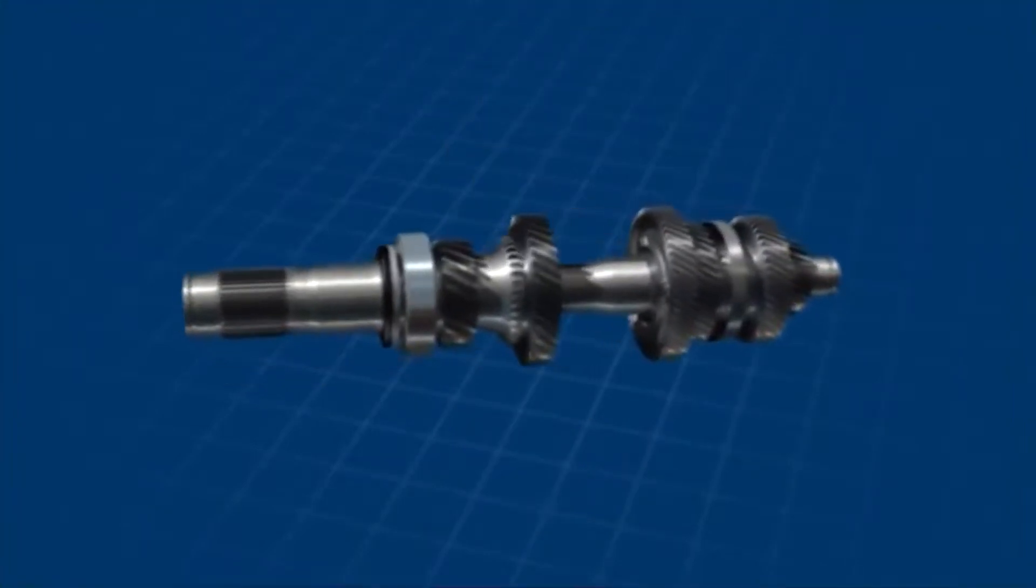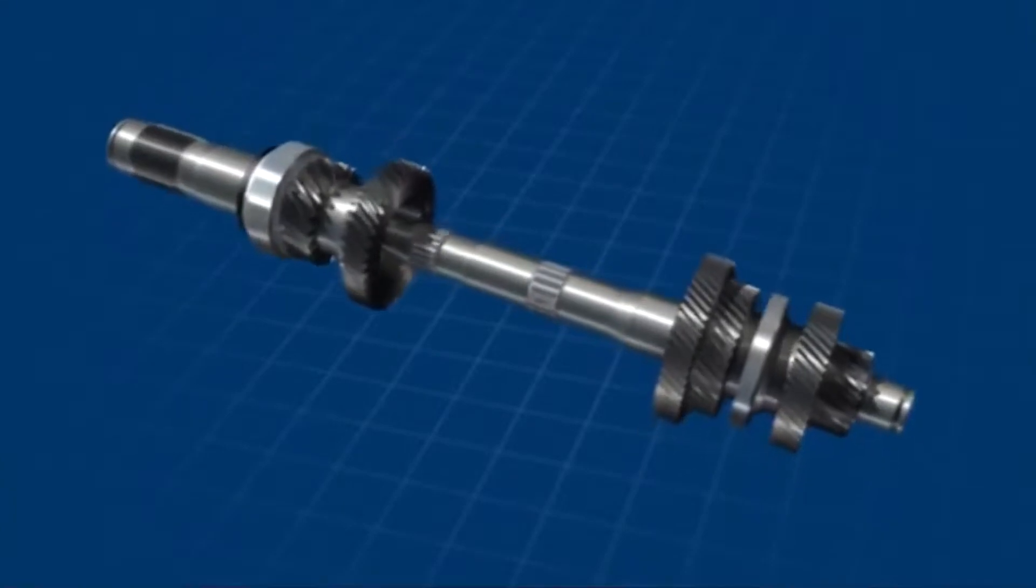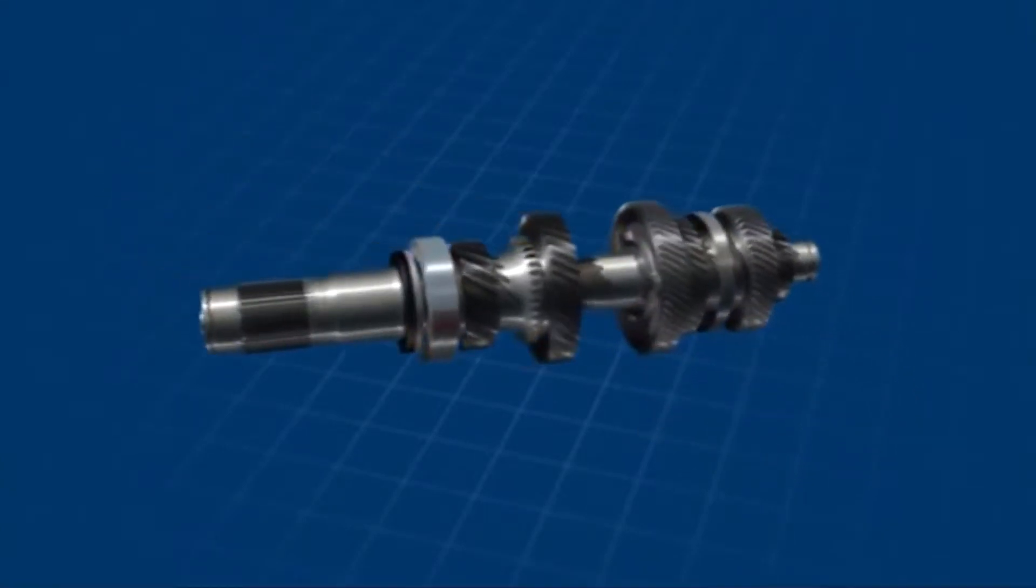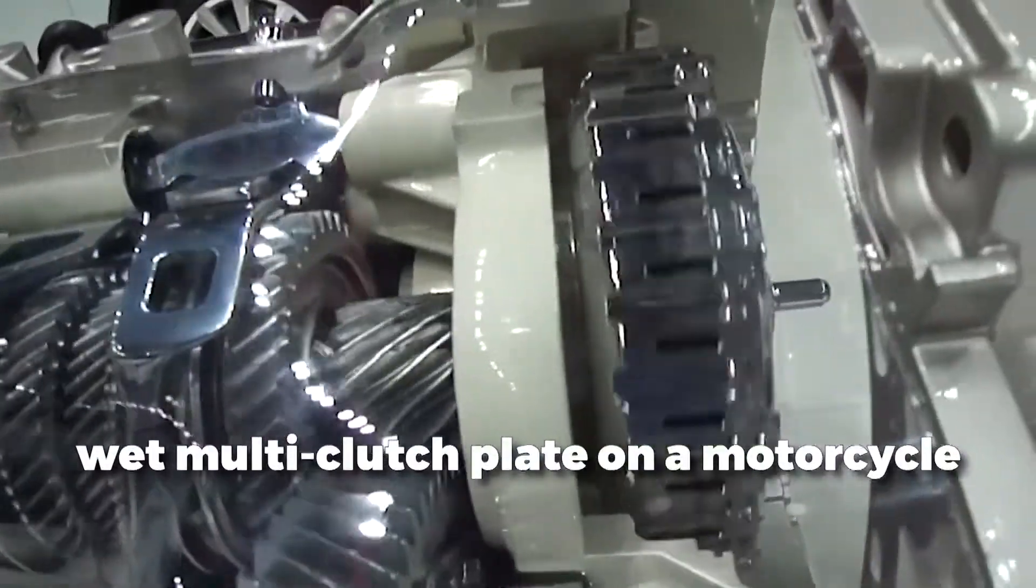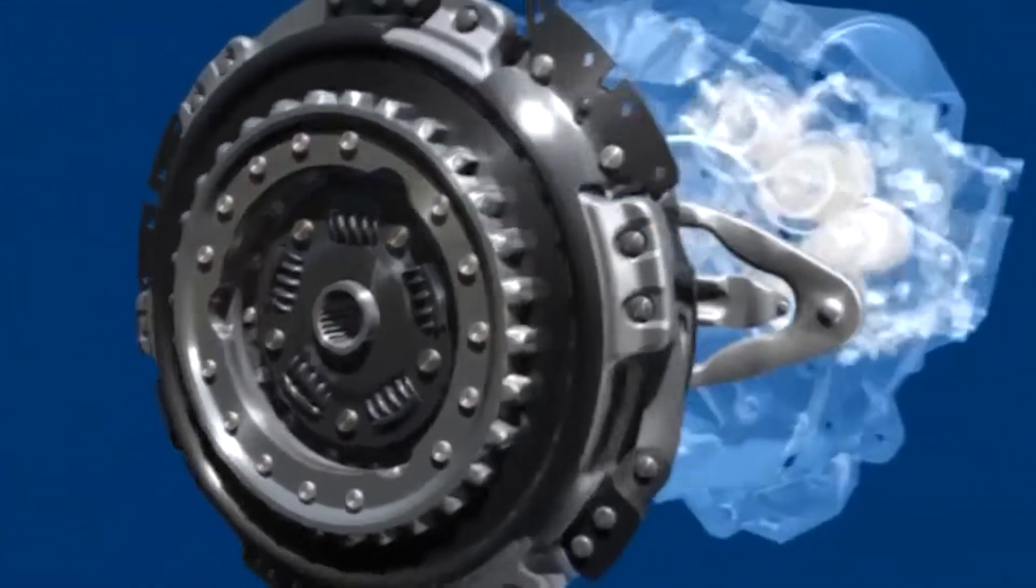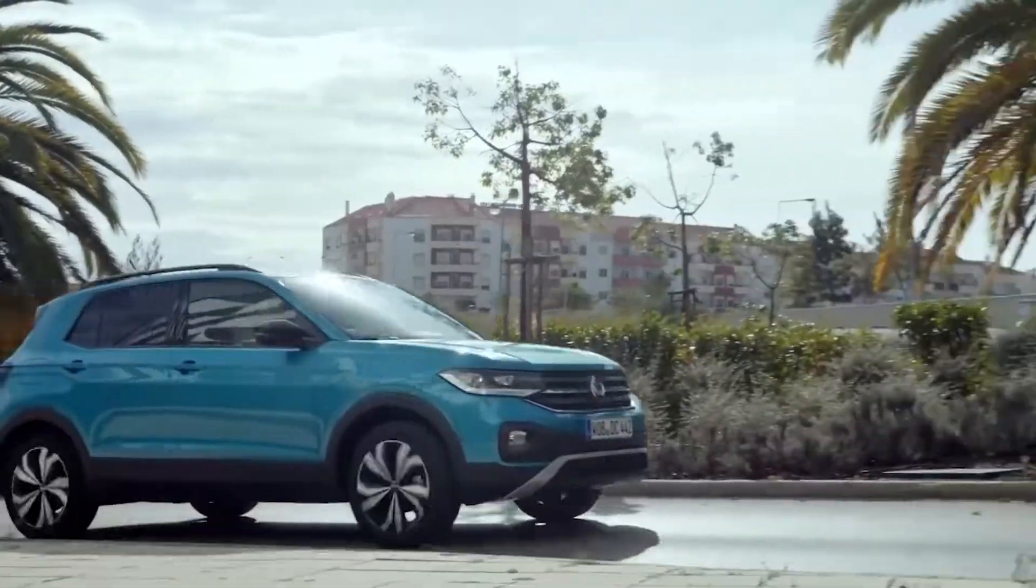The larger or outer shaft is in charge of driving gears 1, 3, 5, and reverse, while the smaller or inner clutch shaft drives gears 2, 4, and 6. The DSG transmission functions similarly to a wet multi-clutch plate on a motorcycle. The DSG transmission is licensed under the Volkswagen Group and is used in Volkswagen Group vehicles.